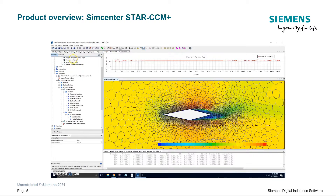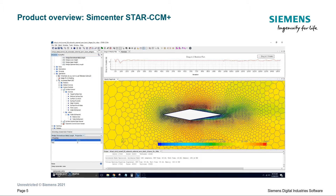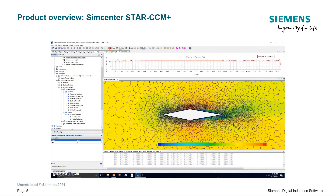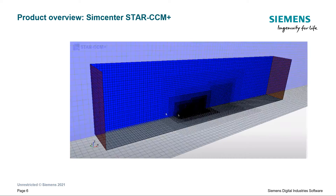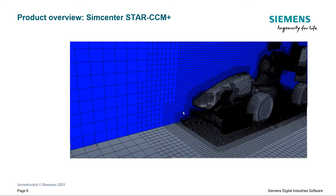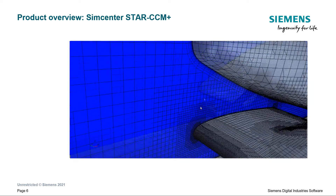This allows users to do things not possible in other software. For example, you can view a 3D solution scene that updates while it runs, stop the run, adjust the CAD — which can be connected to Siemens CAD — select mesh, feed the CAD change into the mesh setup, and at the end of meshing automatically map the existing solution onto the new mesh, then select run. Star-CCM+ also provides renowned meshing capabilities that users consistently find robust and easy to use.